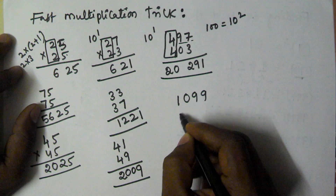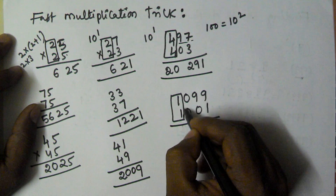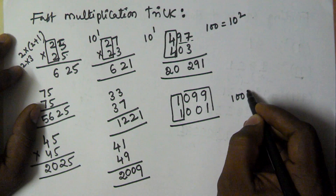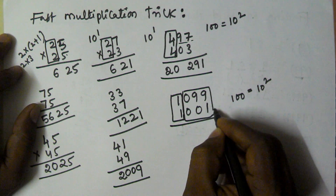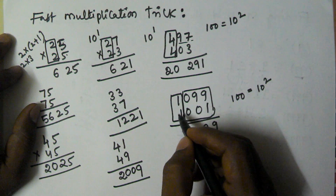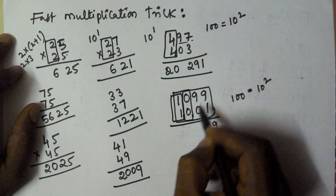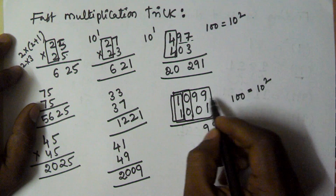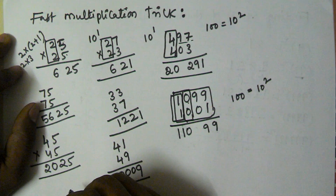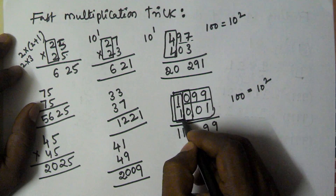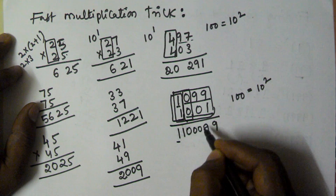Next, extend this logic to 1099 and 1001. Here the leftmost digits are the same and the sum of the remaining digits is 100, which is 10 squared. We multiply 99 into 1, which is 99, and 10 into 10 plus 1 is 10 into 11, which is 110. But after the left part there are three digits, so we need to pad with two zeros, giving the answer 1100099.